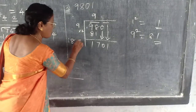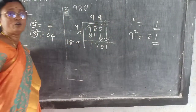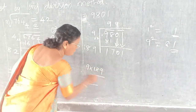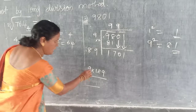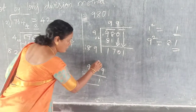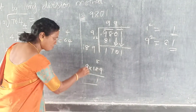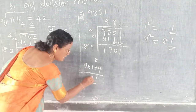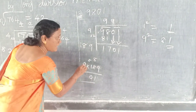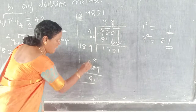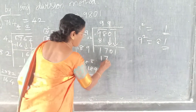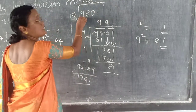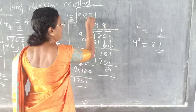So what number you have to choose? Compulsory you must write 9. So 9 into 189: 9 9's are 81, remainder 8. 9 8's are 72, 72 plus 8 is 80. 9 1 is 9, 9 plus 8 is 17 — carry. So root of 9801 equals 99.